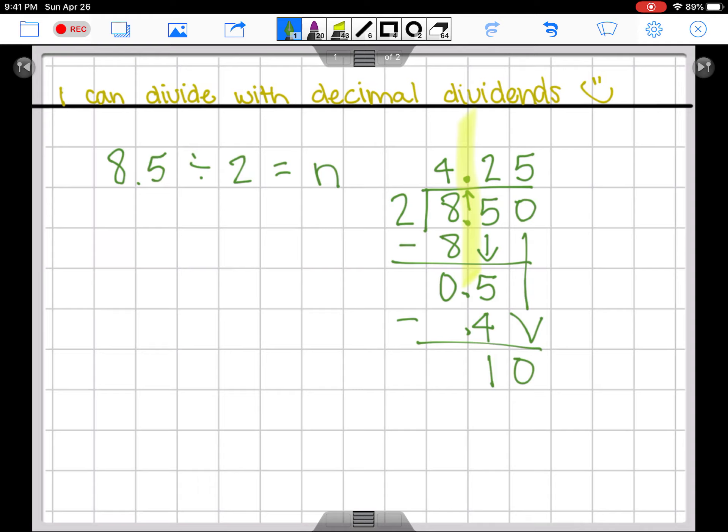That is going to be five times. It's really five hundredths. Five hundredths multiplied by two. There we go. Five times two is ten. We will subtract and have nothing left.